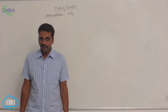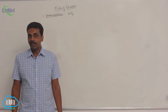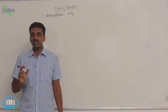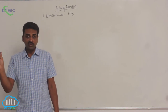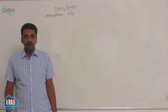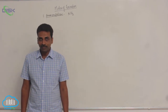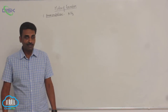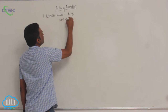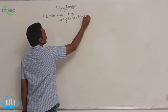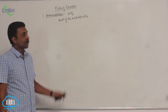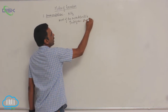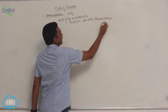Ammonia is seen as the excretory product in most invertebrates — for example, protozoans like Amoeba, Paramecium; porifera like Sypha; cnidarians like Hydra; arthropods like Palaemon (freshwater prawn); echinoderms like sea urchins; bony fishes; and the aquatic tadpole larva of frogs. So in most invertebrates, the excretory product is ammonia.